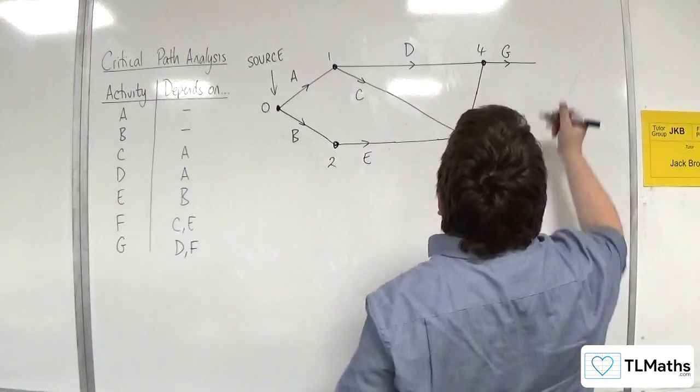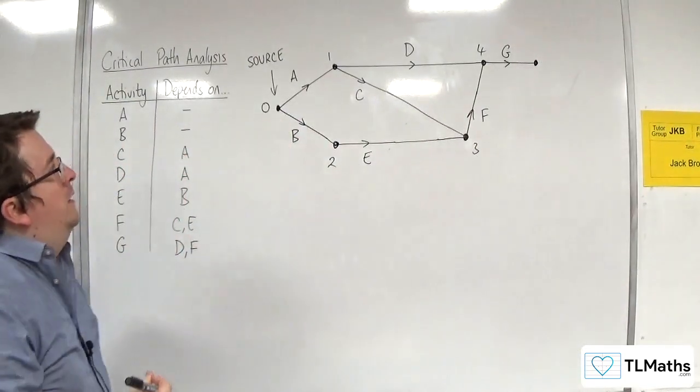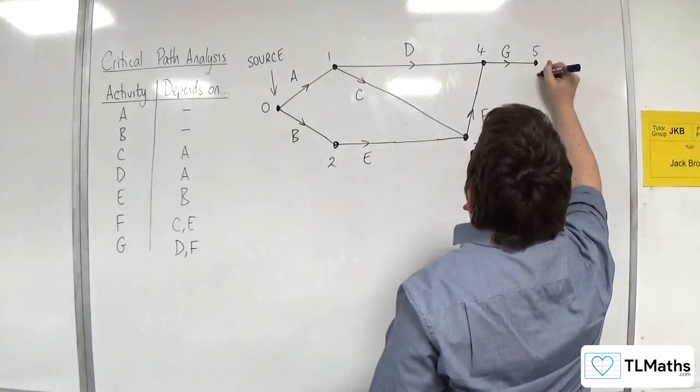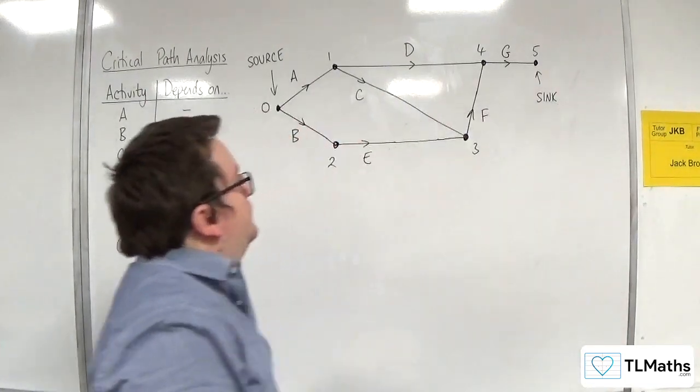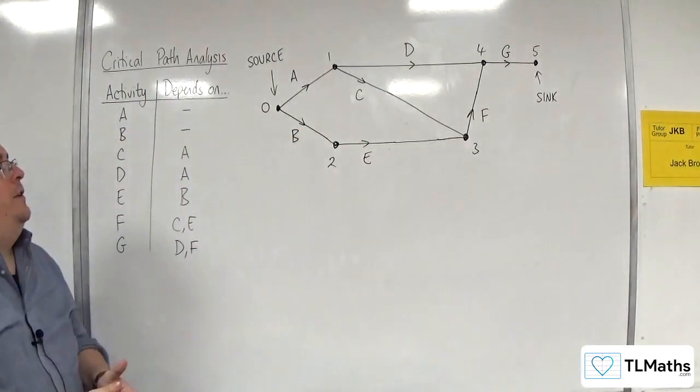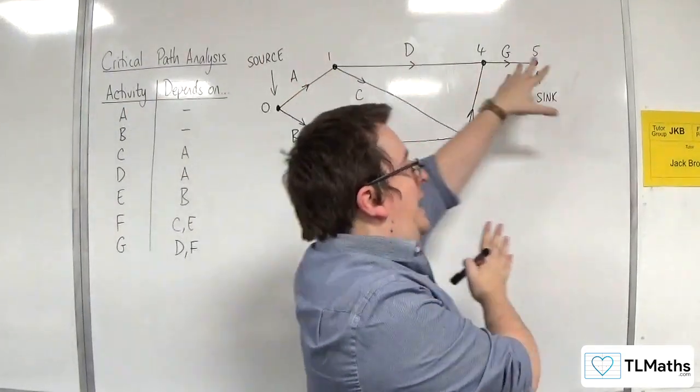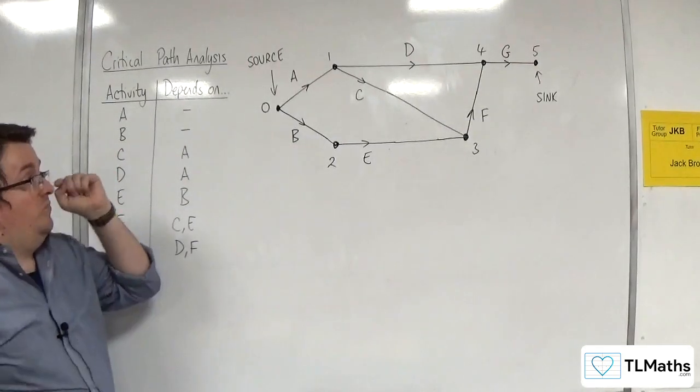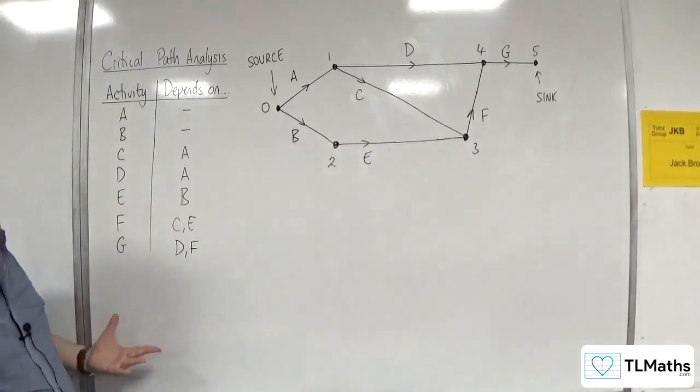And there's no other activities. So, I need a finishing node. Number 5. And that is essentially the sink. So you've got the source, everything flowing out of the source, then everything flowing into the sink. So, here is the activity network based on this precedence table.